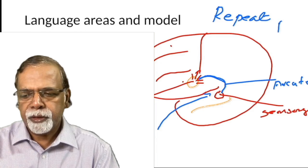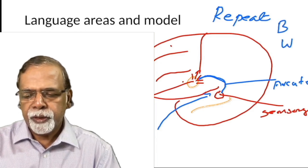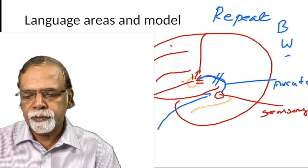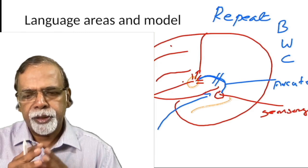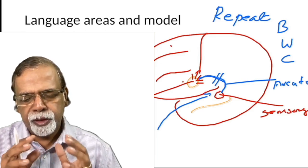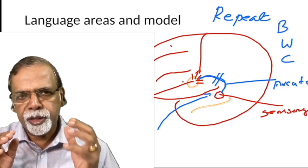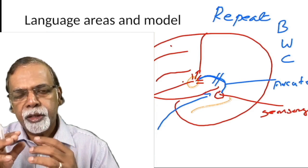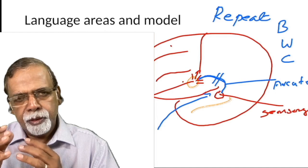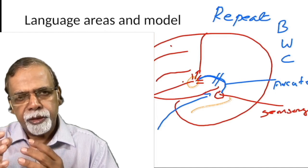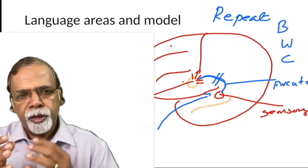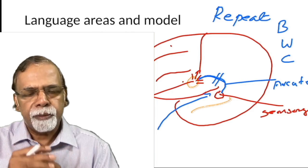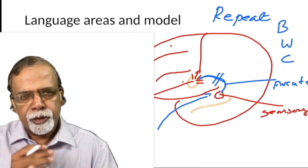In Broca's aphasia, Wernicke's aphasia, and conduction aphasia — where the arcuate fasciculus is interrupted — repetition is impaired. For verbal speech: you hear it, it reaches Heschl's gyrus, goes to Wernicke's area where the language gets meaning, from there it goes to Broca's area where appropriate muscles are stimulated and speech output occurs.